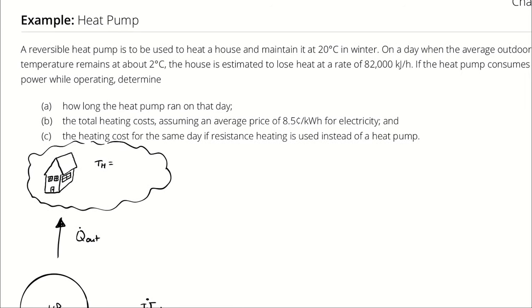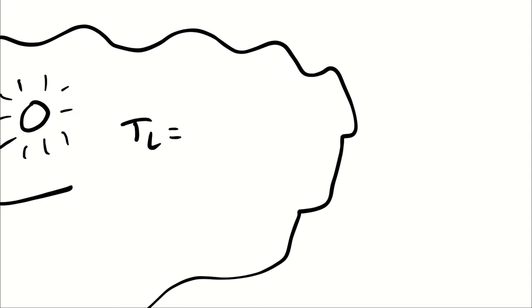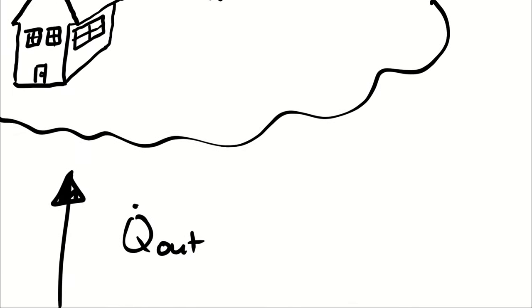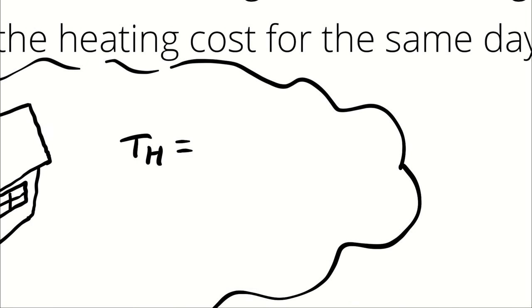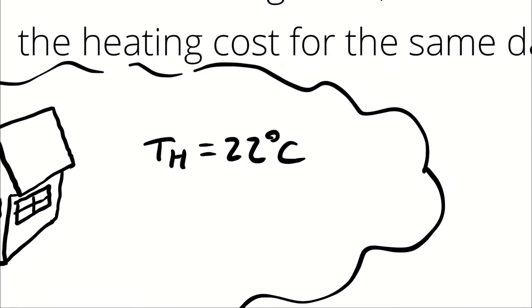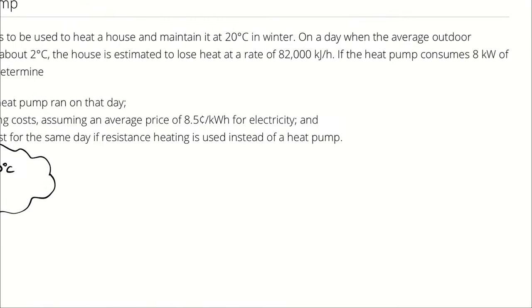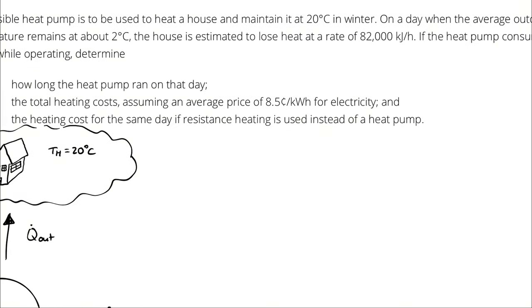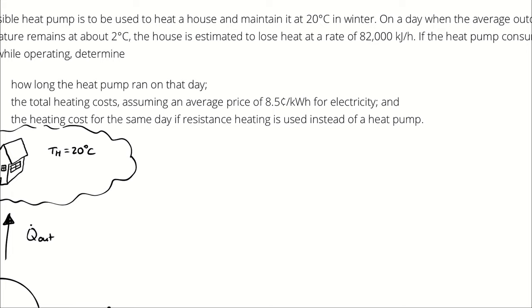The heat pump is pushing heat from the cool outside air, which is 2 degrees Celsius, to the warm inside air, which is 20 degrees Celsius. I was told that the house is naturally losing heat to its atmosphere at a rate of 82,000 kilojoules per hour.